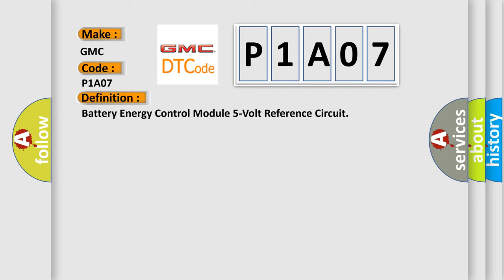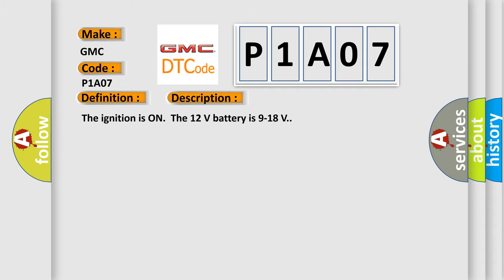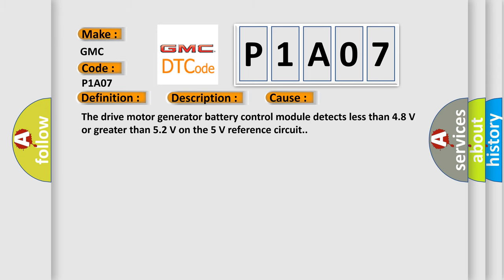And now this is a short description of this DTC code. The ignition is on, the 12 volt battery is 9 to 18 volts. This diagnostic error occurs most often in these cases. The drive motor generator battery control module detects less than 4.8 volts or greater than 5.2 volts on the 5 volt reference circuit.